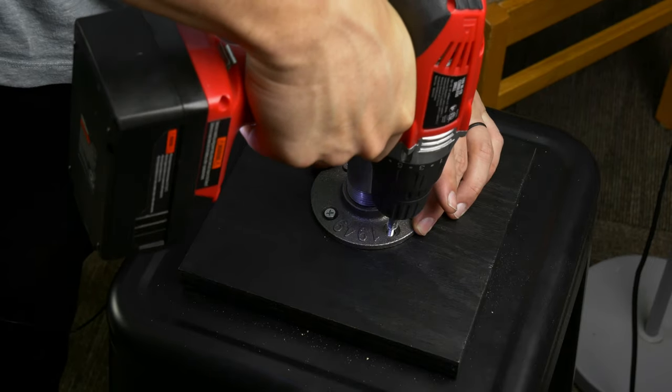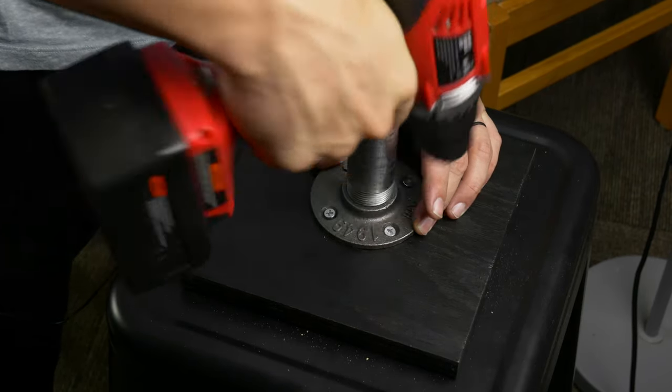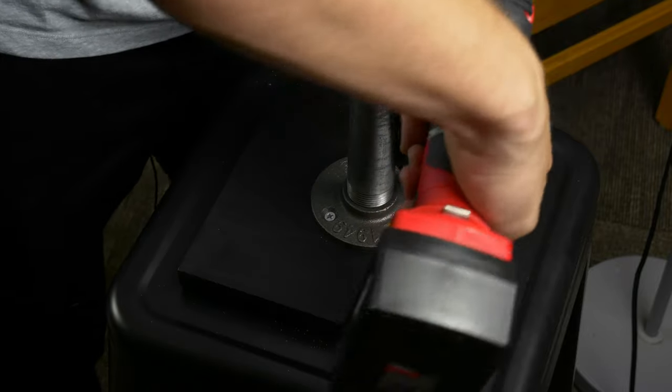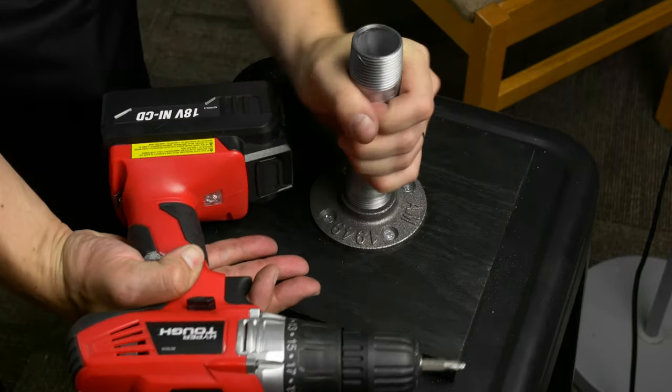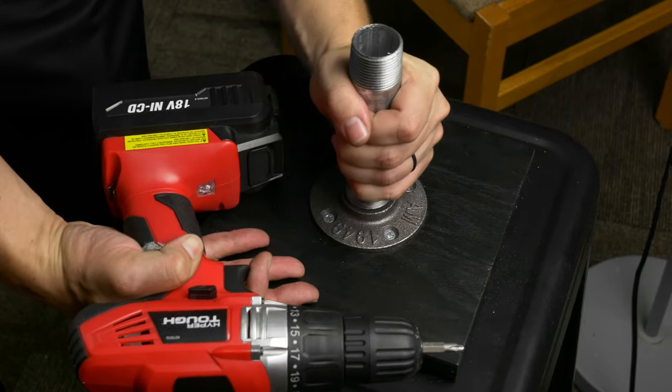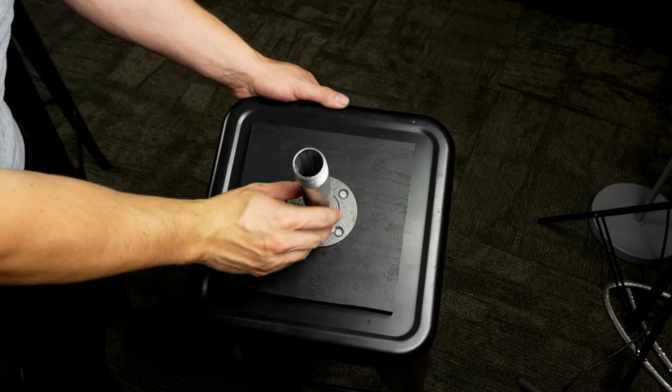Now I'm going to screw the floor flange into place on that black plywood board. Once we've attached the board onto the stool and then the floor flange onto the board we can screw the one inch metal pipe into place and this is what it should look like.